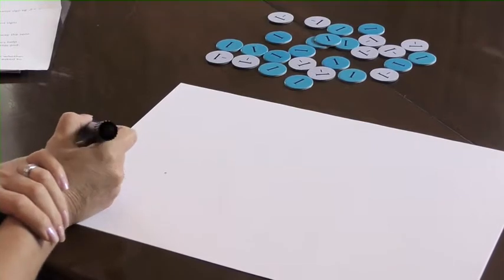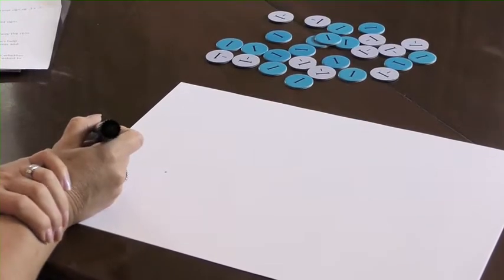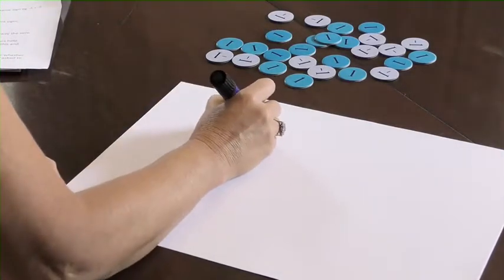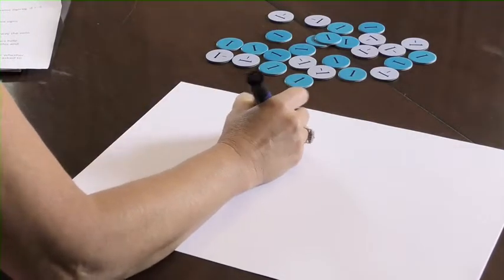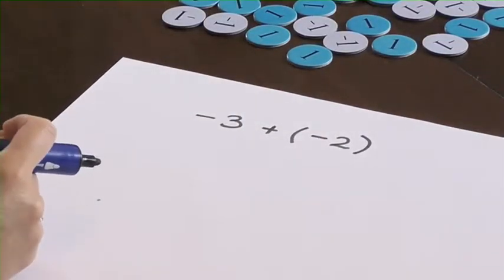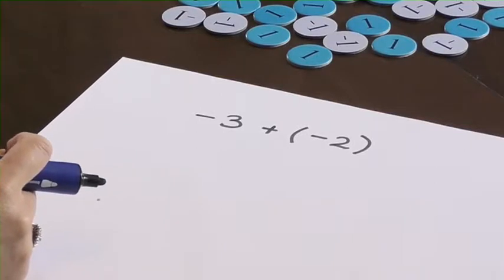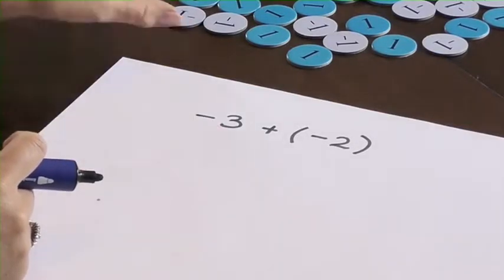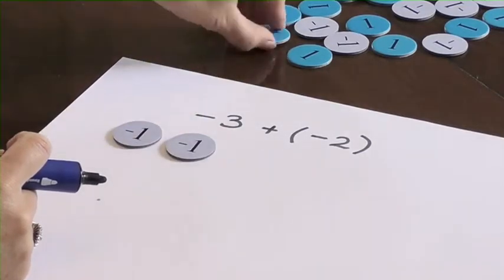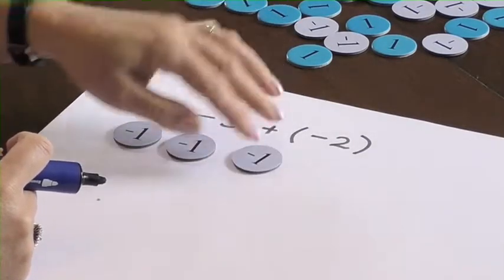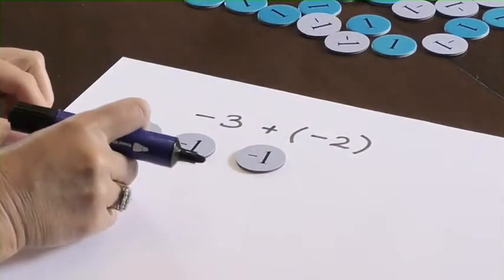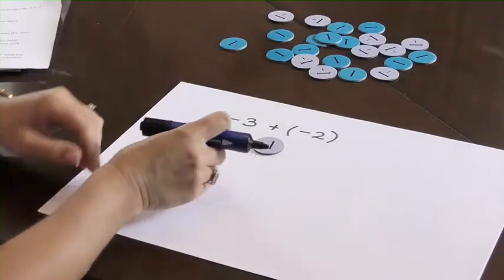So let's have a look at adding two integers with the same sign, for example, negative 3 plus negative 2. Using the algebra disks to represent these numbers, we'd have three of the negative 1's — 1, 2, 3 — and 2 of the negative 1's.